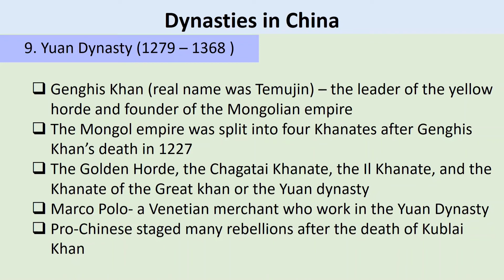Yuan Dynasty, from 1279 to 1368 CE. The Mongol rule of China began after Genghis Khan and his great horde of horsemen warriors overran north and central Asia. His real name was Temujin, but he was given the title Genghis Khan, which means universal ruler. His grandson Kublai Khan continued his empire, defeated the Song Dynasty, and became the emperor of both China and Mongolia.